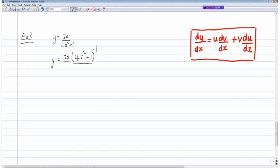So again, we say u is equal to 2x, v is equal to (4x² + 1) to the power of minus 1.